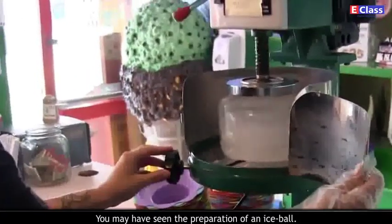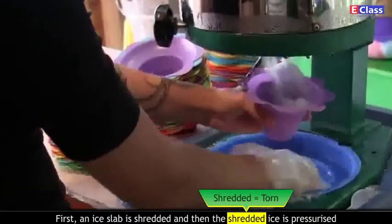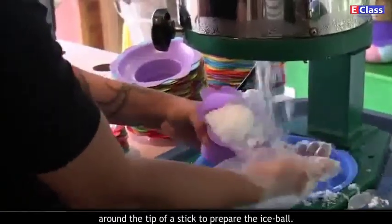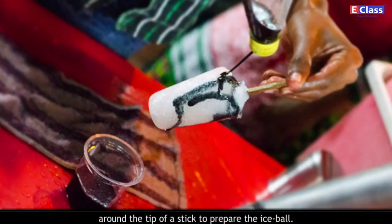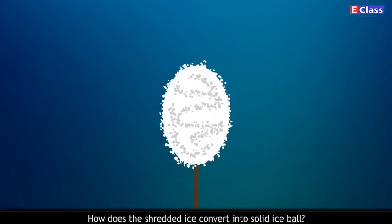You may have seen the preparation of an ice ball. First, an ice slab is shredded and then the shredded ice is pressurized around the tip of a stick to prepare the ice ball.